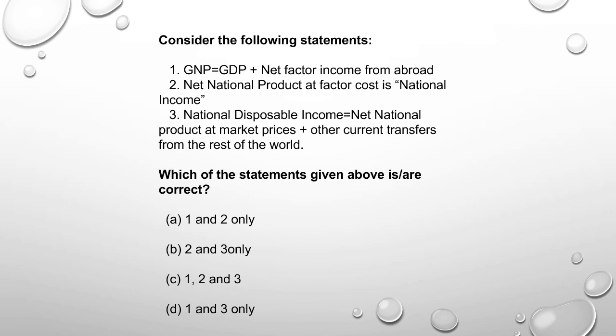Net National Product at factor cost is national income. NNP at factor cost is national income — that is correct. Option 2 is correct.